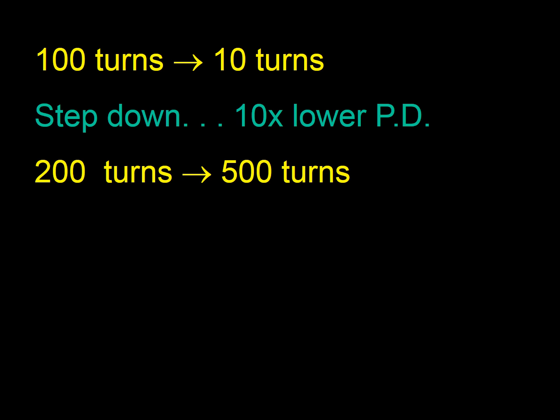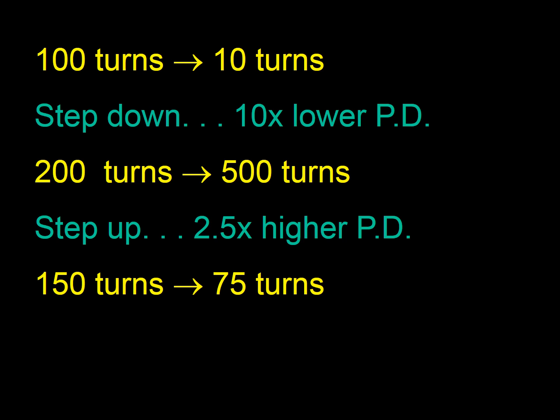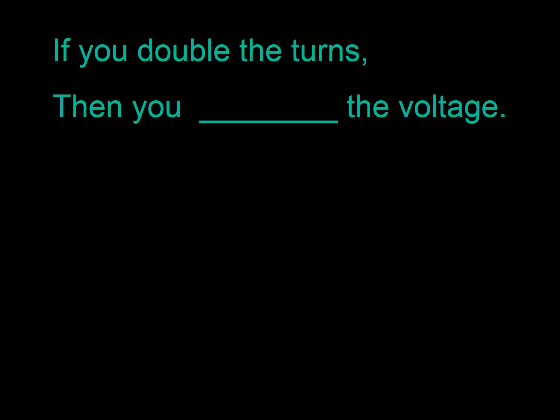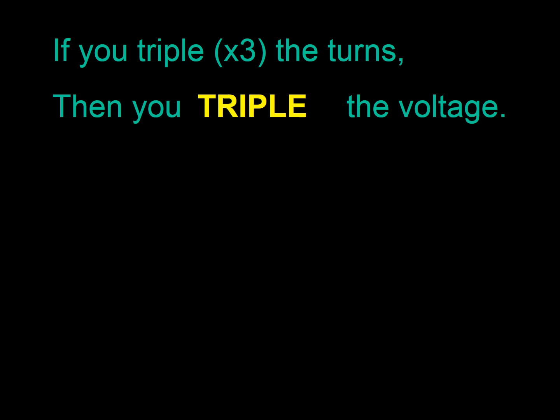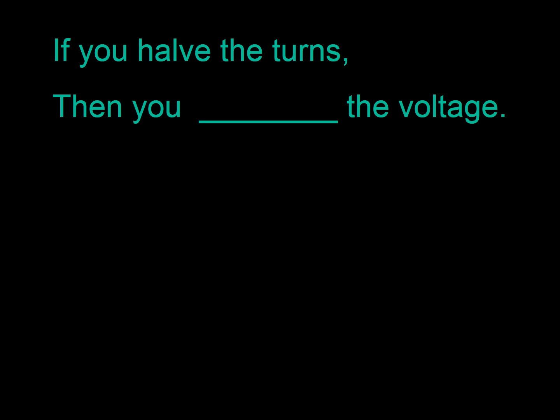Two hundred turns, that's going up. It's going up by a factor of two point five. So the potential difference will be two point five times higher. That looks like it's halving. If it's halving, then the potential difference will halve. Basically, if you double the turns, you double the voltage.